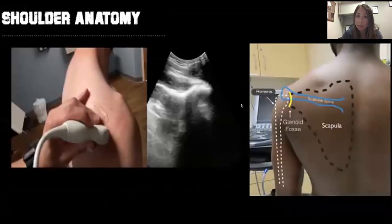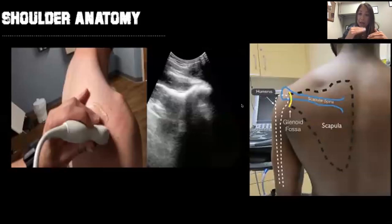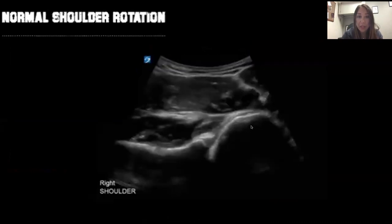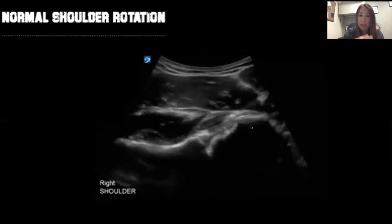Shoulder complaints are very common in the emergency department and ultrasound is a great utility for diagnosis. When doing a shoulder ultrasound we come from the posterior aspect — anything posterior on our screen is anatomically anterior. You want to initially find your scapular spine, then your glenoid fossa, then the humeral head. Here's normal shoulder anatomy: scapular spine, glenoid fossa, and humeral head. Normally when you have the patient internally and externally rotate, you can see everything is together and in alignment.